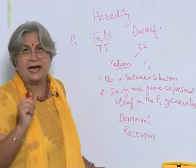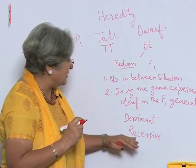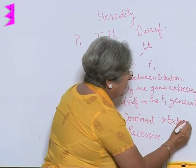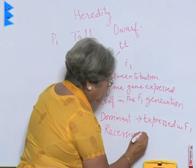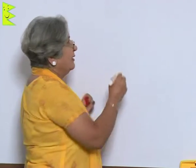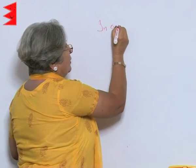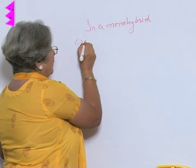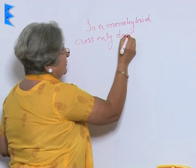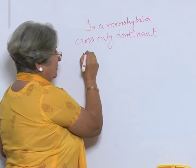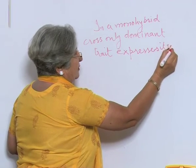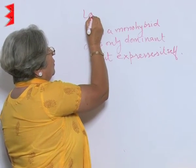The dominant trait was that trait which expressed itself in the F1 generation, while the recessive was the one that did not express in F1. On the basis of his observations, he concluded that in a monohybrid cross only one trait — the dominant one — appears in the F1 generation. Only the dominant trait expresses itself. This he called the Law of Dominance.